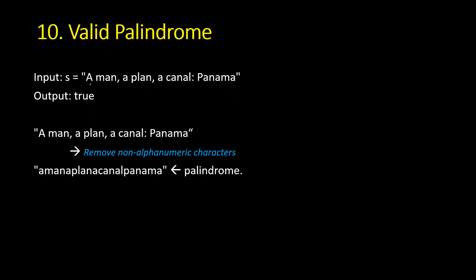The tenth problem is Valid Palindrome. Given a sentence with English letters, numbers, and non-alphanumeric characters, remove all non-alphanumeric characters, convert everything to lowercase, then check whether the result is a palindrome by comparing first and last characters, second and second-last, and so on. I hope these 10 problems are helpful for preparing for Facebook programming interviews — please subscribe for more such videos.